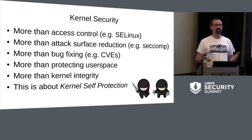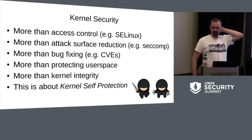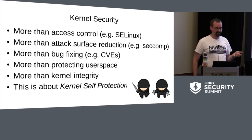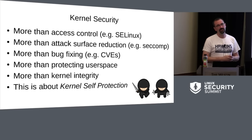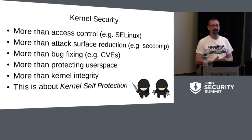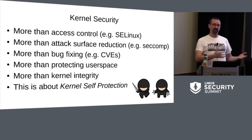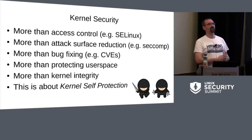This is a Linux security summit and security is a pretty loaded word. For the context of this presentation, I'm talking about things beyond access control, beyond attack surface reduction, beyond bug fixing, beyond protecting user space, and even beyond simple kernel integrity. This is about self-protection technologies — proactive systems in the kernel to stop attacks, specifically protecting the kernel itself as opposed to what the kernel implements to protect user space.